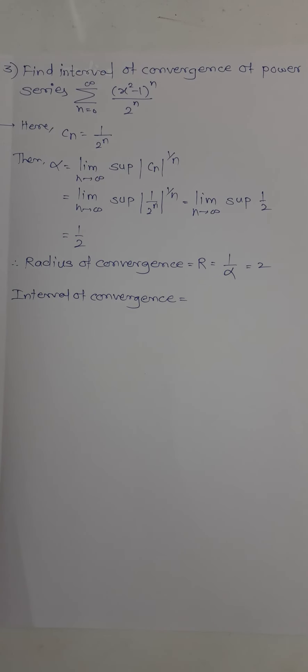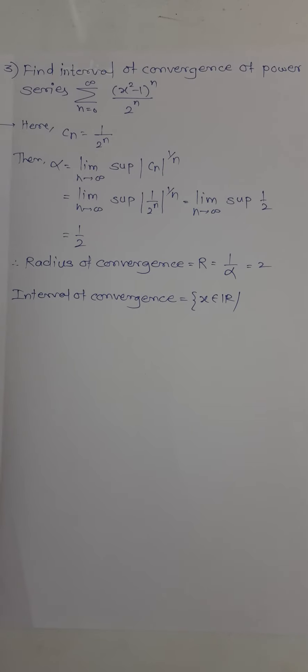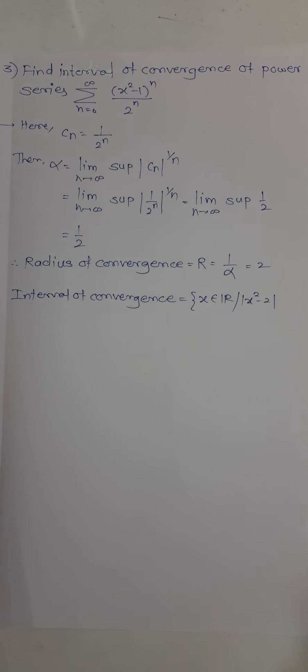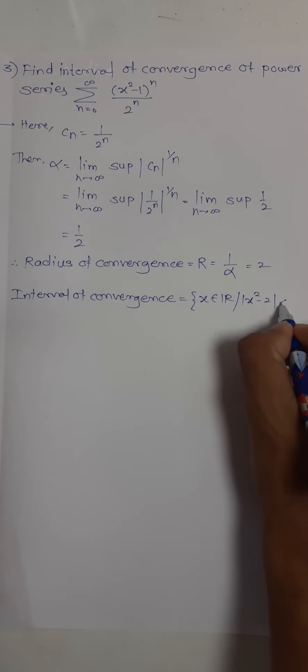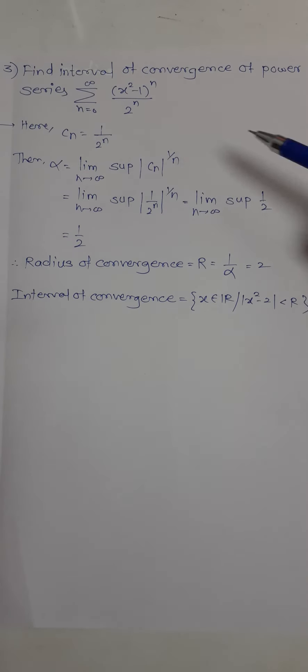What is the definition of interval of convergence? It's the set of real numbers such that mod x less than R. But I'm writing mod x squared minus 1 less than R, because in this series we have x squared minus 1.